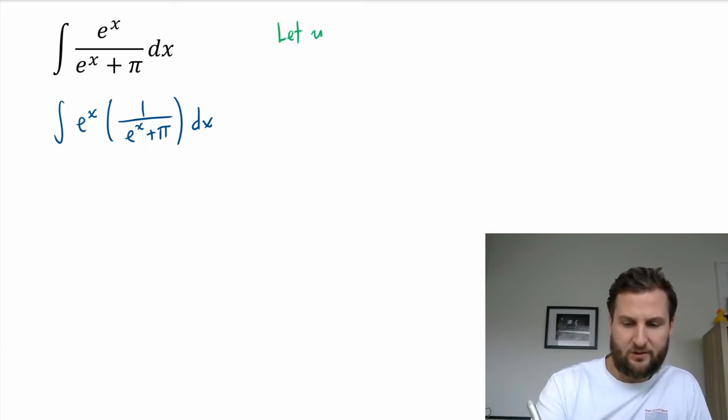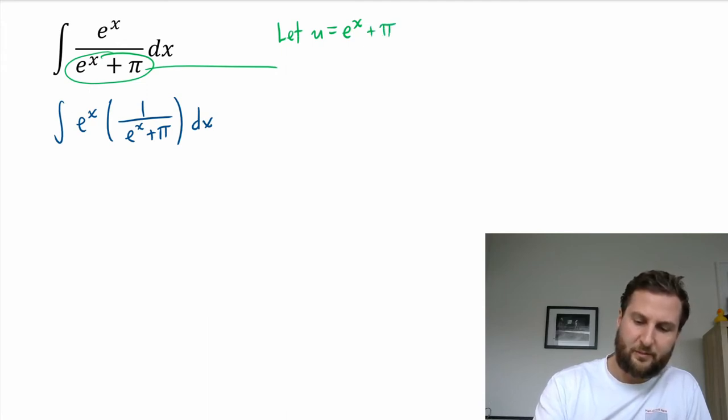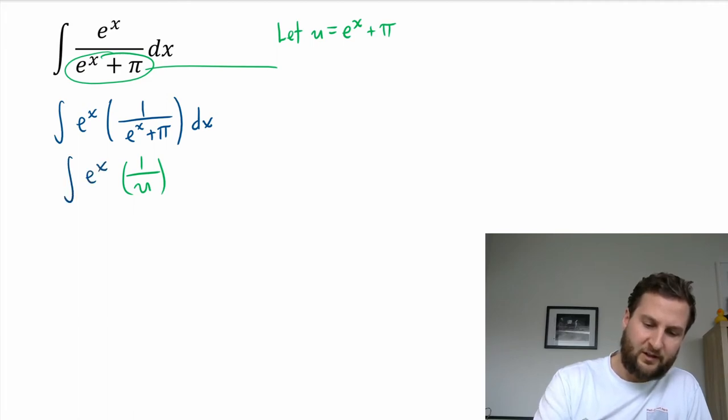So u equals e to the x - and here, well you could actually do the whole denominator e to the x plus pi - and then I would have one over u as my integral. I still have e to the x here.